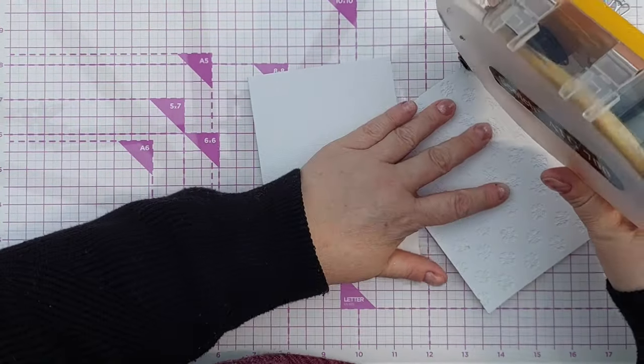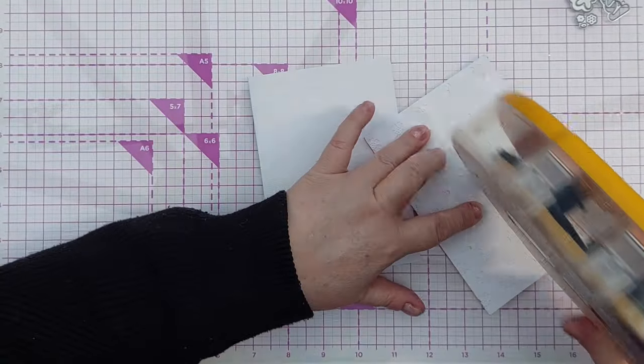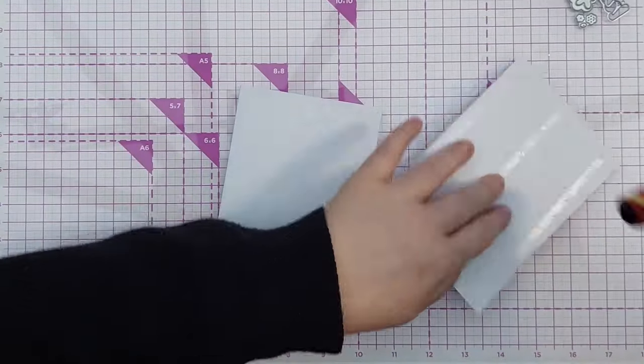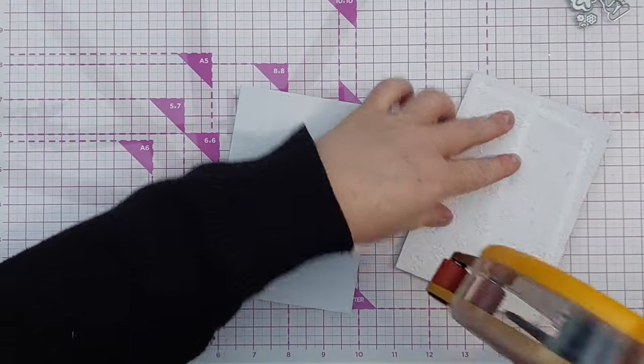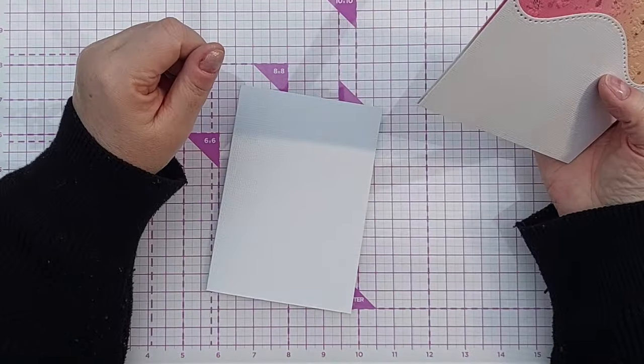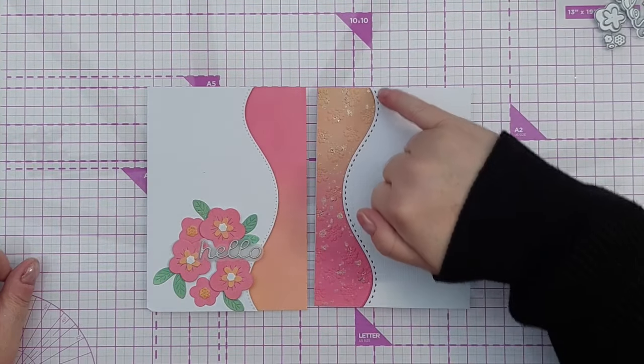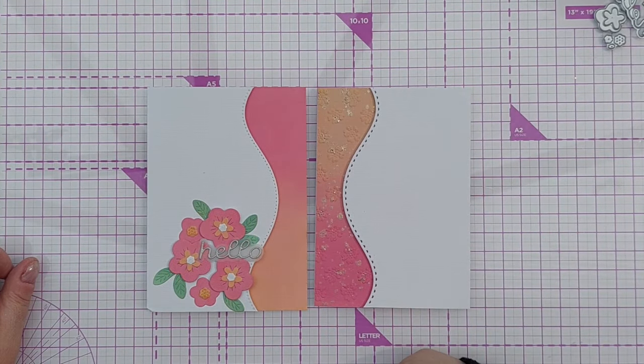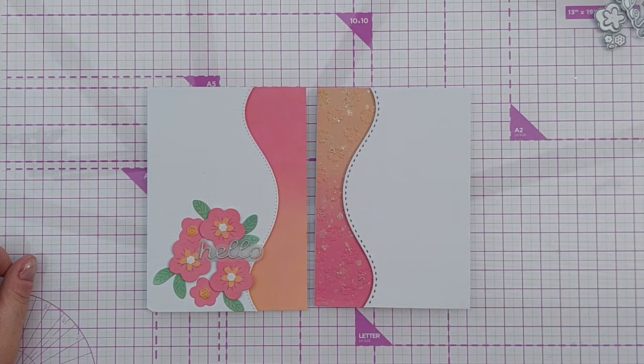So this is now ready to go on my card blank and I can stick it down in exactly the same way by lining it up perfectly using the scoreboard. So we've got a bit more detail on this one. We've got the semicircles punched out, we've got some pattern and some splatter.